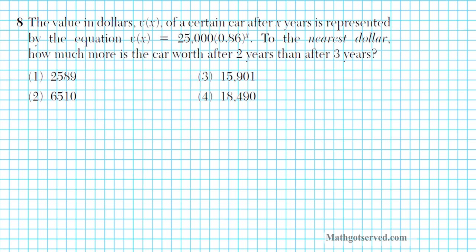Let's take a look at problem 8. It reads: the value in dollars V of x of a certain car after x years is represented by the equation V of x equals 25,000 times 0.86 to the x. To the nearest dollar, how much more is the car worth after 2 years than after 3 years? Since the base is 0.86, this is an exponential decay situation — the car depreciates over time.